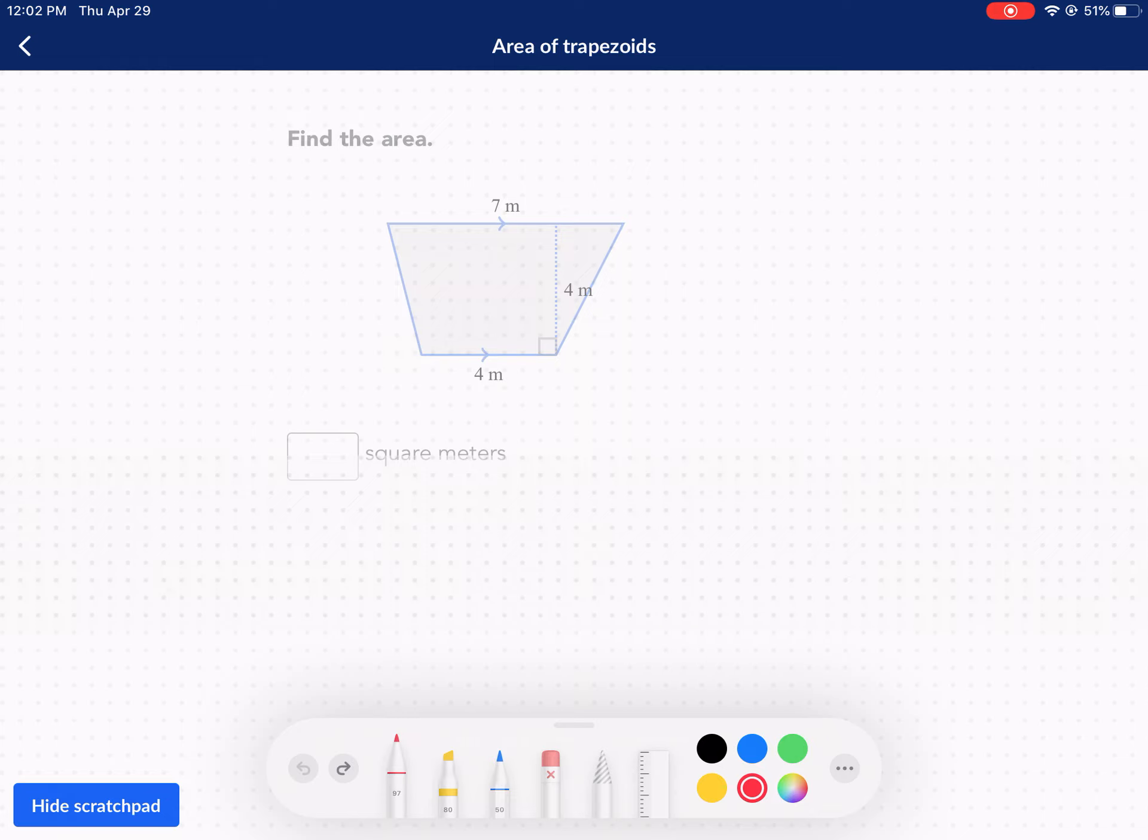So the parts of a trapezoid we need to know about: the parallel sides we call the bases. So I labeled this one B1, B2, base 1, base 2. The distance between the bases is known as the height. The height is always perpendicular to the bases, and since they're parallel, that's perpendicular to both bases.